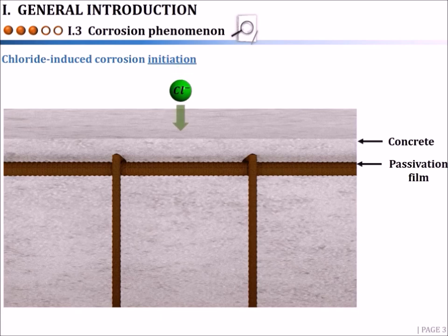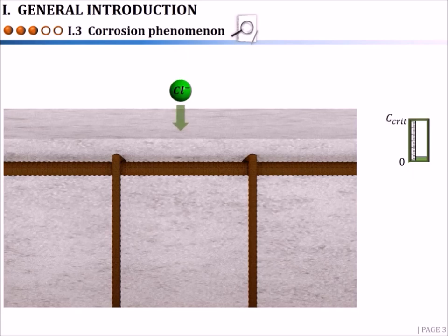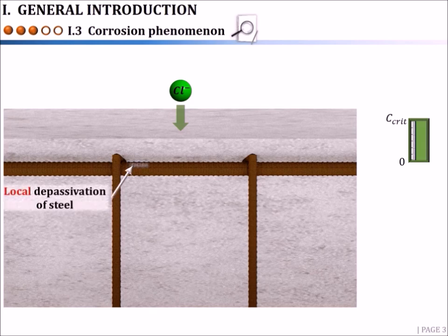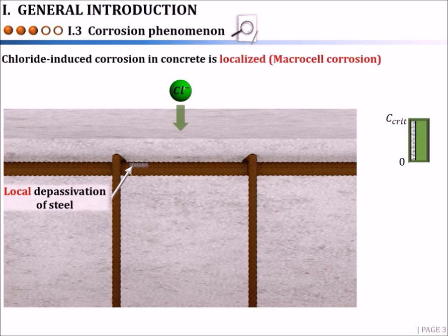However, in the presence of chlorides, it is assumed that corrosion initiation occurs when the chloride content at the depth of the rebar reaches a critical chloride threshold value called Ccrit. Hence, the steel is locally depassivated and a macrocell corrosion is established, since the remaining steel area of the rebar besides the active spot, or in other layers of reinforcement, is still in a passive state.